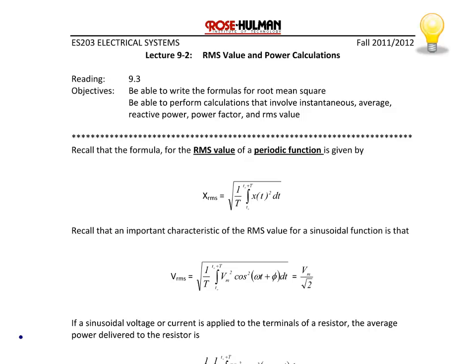Today we will start lecture 9-2 on the RMS value and power calculations. This content comes from section 9.3 in the text. At the conclusion of today's lecture, students should be able to write the formulas for root-mean square, be able to perform calculations that involve instantaneous average reactive power, power factor, and the RMS value.